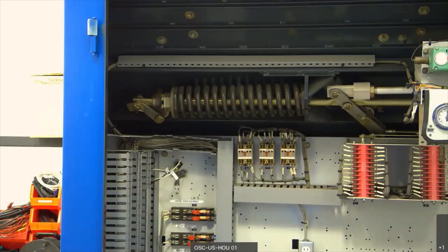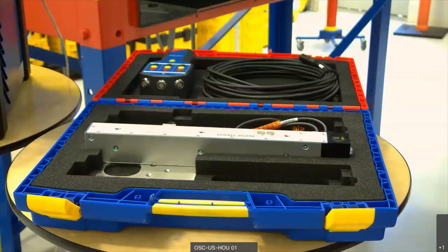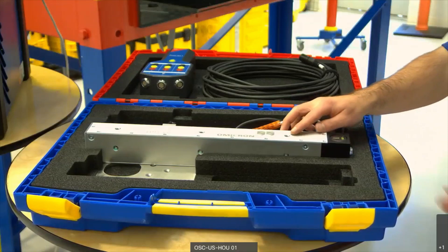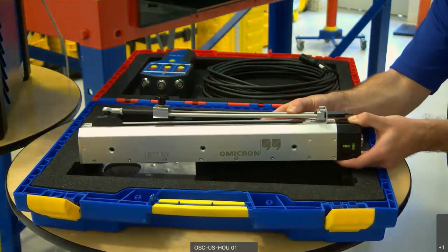Our first step is always safety, so we want to ensure the breaker won't operate as we mount the transducer. We can verify this by checking the spring and seeing it in a discharged state. This is the transport case for the LDTT 300. Within it is the transducer itself and some tools we use to mount it.